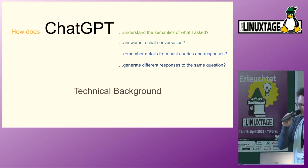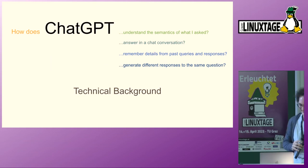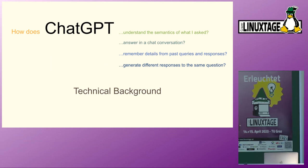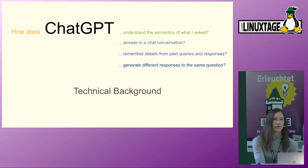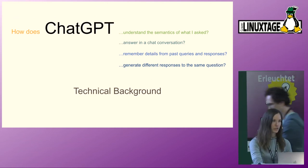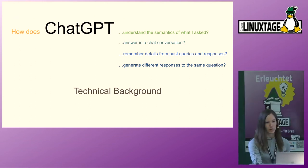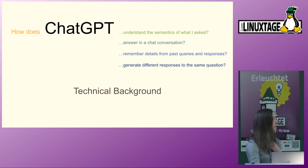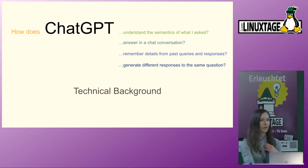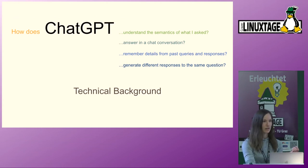Now for the technical background, meant to give an intuition about how the model works, how a model can be trained in general, and how the architecture of the models that ChatGPT is based on looks like. Hopefully this will also answer some frequently asked questions about how the model does certain things and why it's so bad at some other things we don't expect if we don't know how it works.